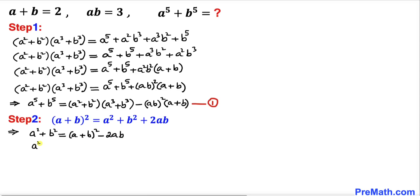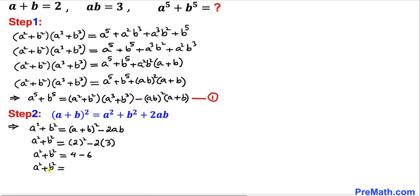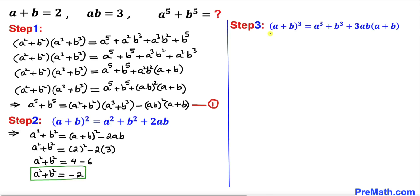So a squared plus b squared equals 2 squared minus 2 times 3. Simplifying the right-hand side: that is 4 minus 6, so a squared plus b squared turns out to be negative 2.